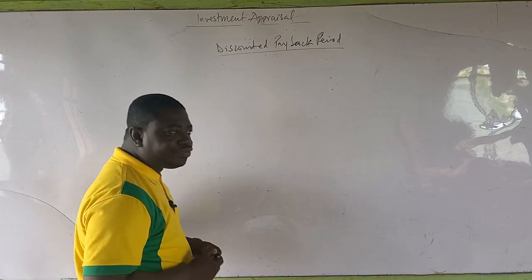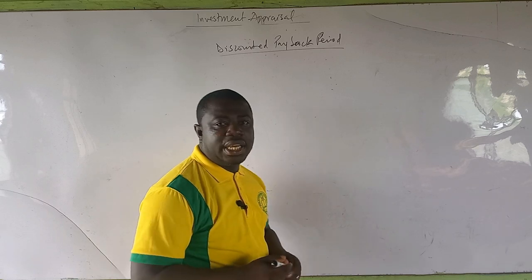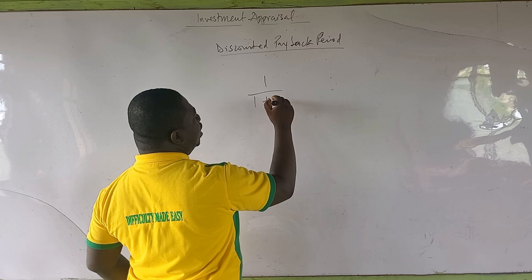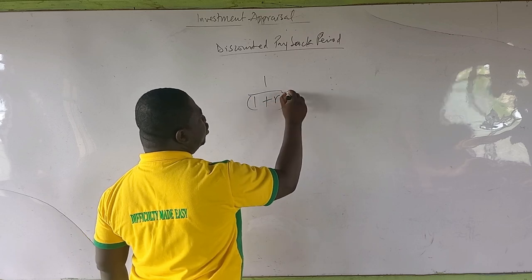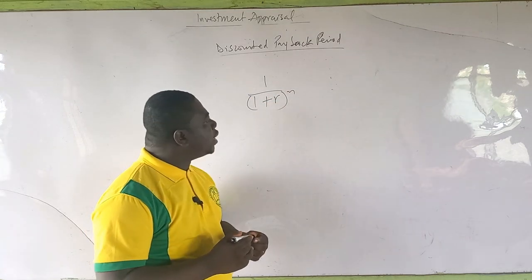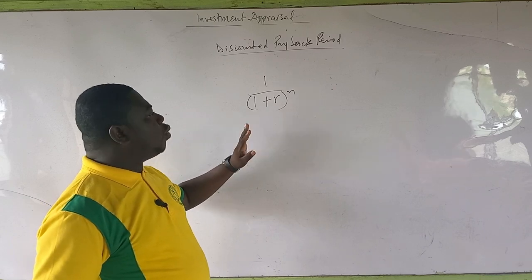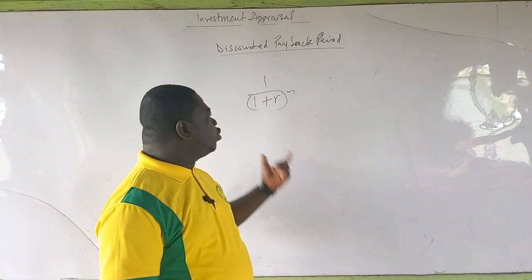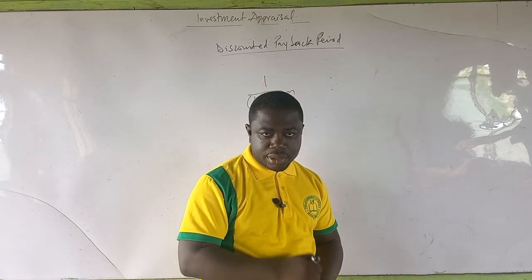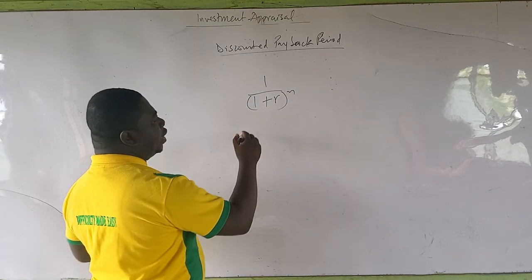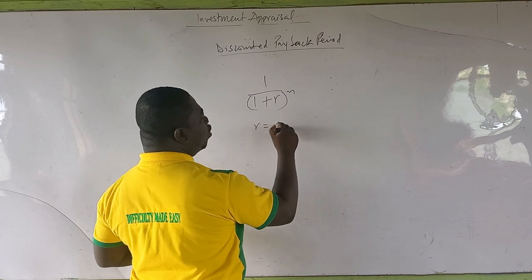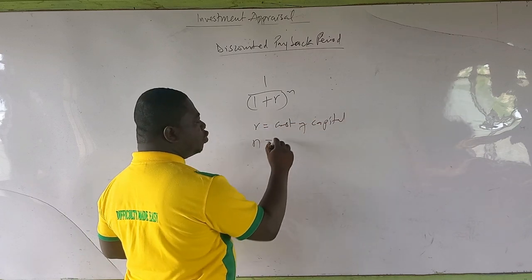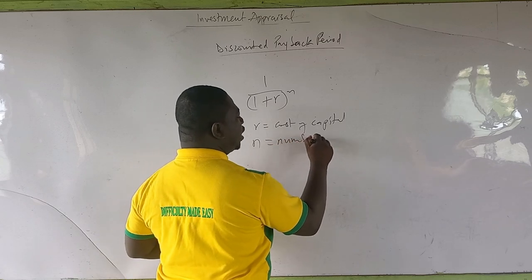The discounting is done using this formula: 1 over (1 plus R) raised to the power N. We are going to use this formula to get all the discounting factors. The discounting is done using the company's cost of capital, where R equals the cost of capital and N equals the number of years you are discounting.